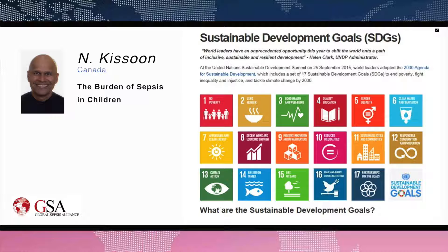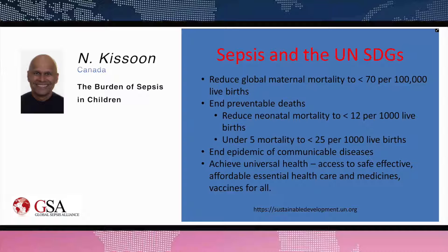The Sustainable Development Goals that pertain directly to sepsis include: reducing global maternal mortality to less than 30 per 100,000 live births, ending preventable deaths by reducing neonatal mortality to less than 12 per 1,000 live births and under-five mortality to less than 25 per 1,000 live births, ending the epidemic of communicable diseases, and achieving universal health including safe, affordable healthcare, medications, and vaccines for all.